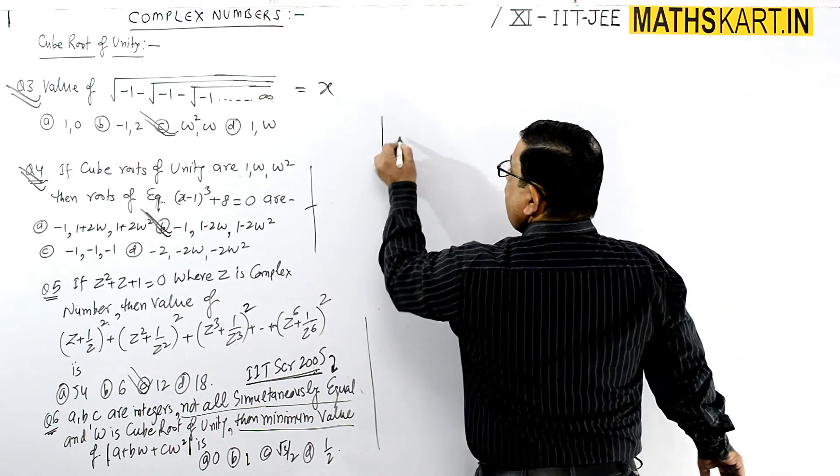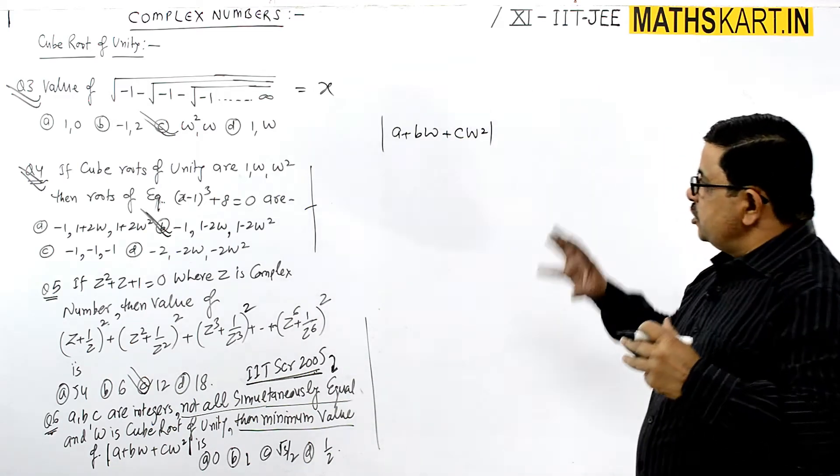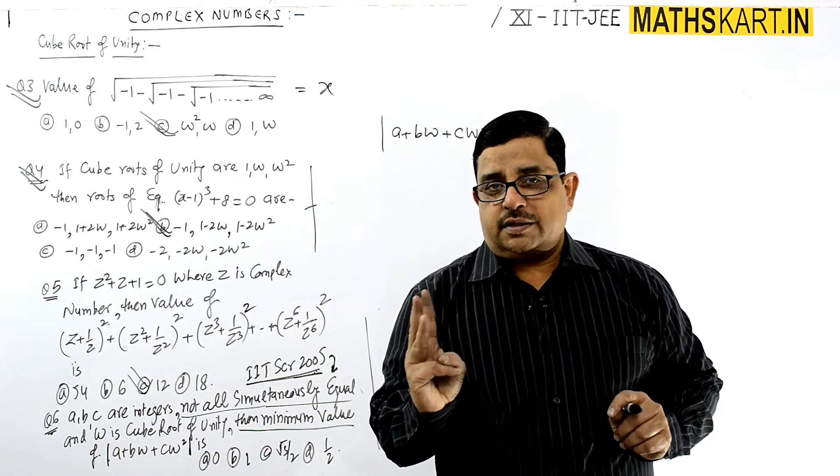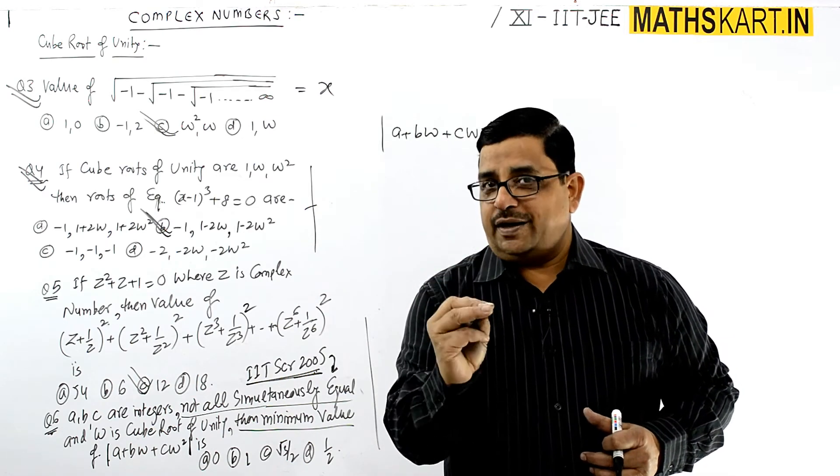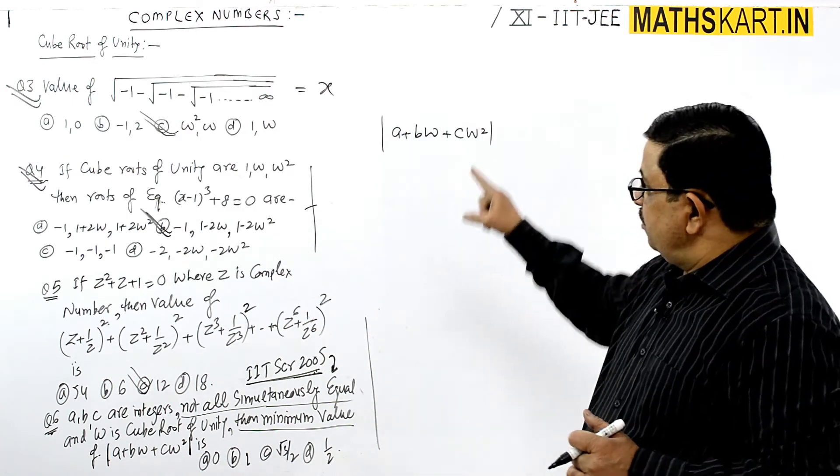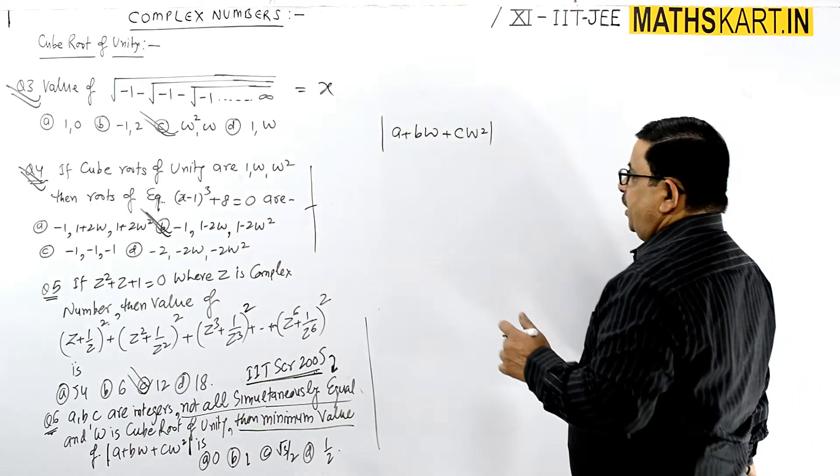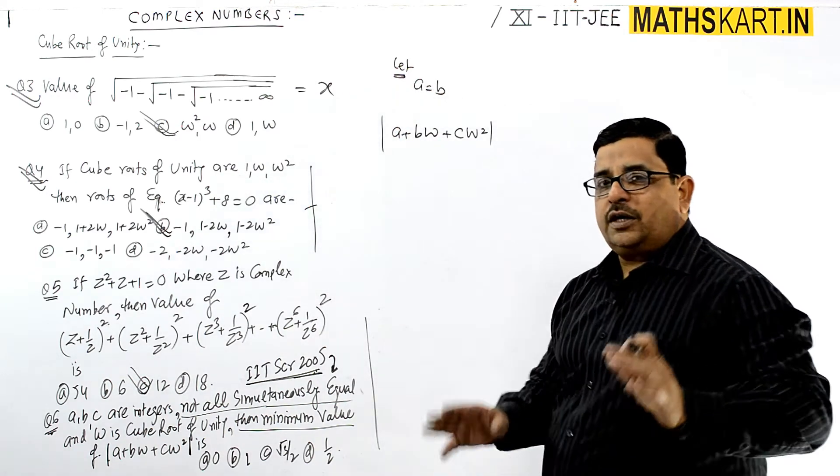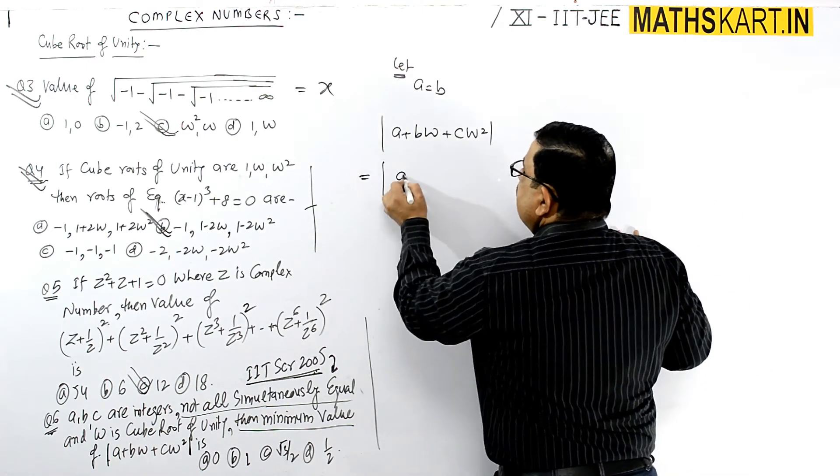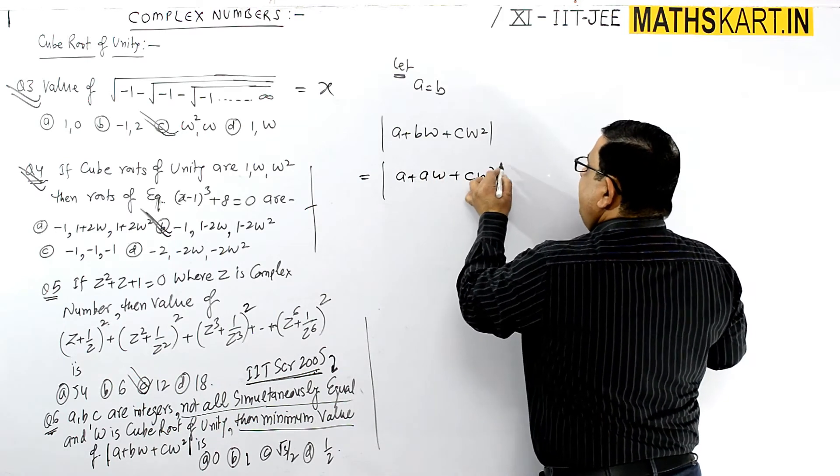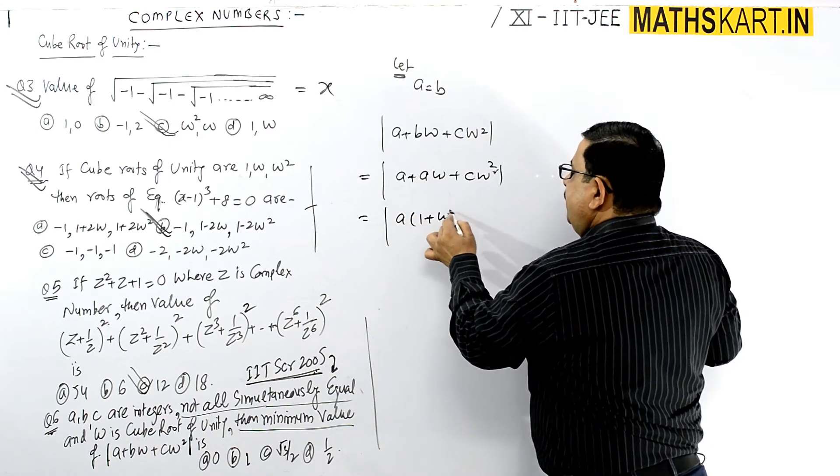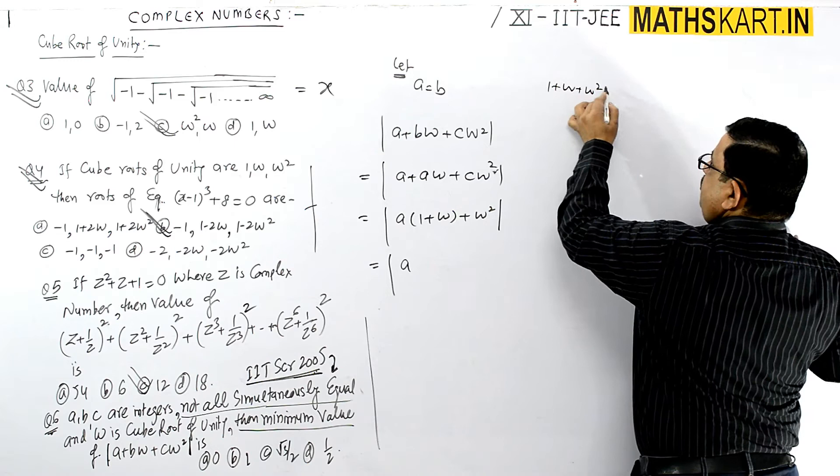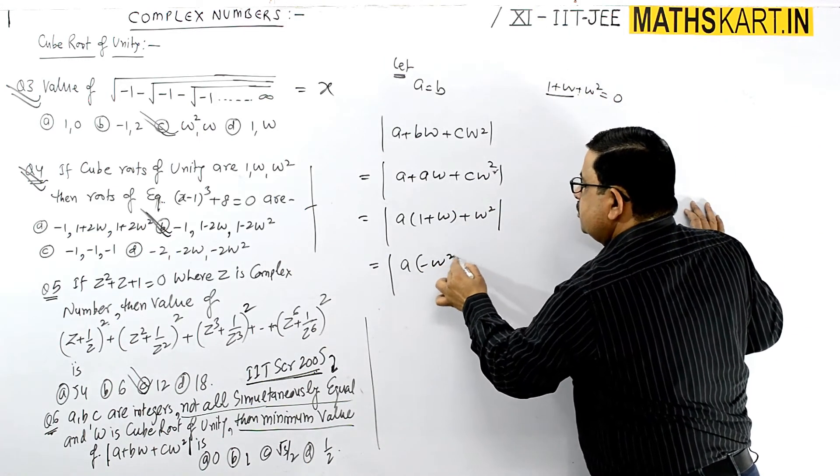Minimum value of this: A plus B omega plus C omega square. The minimum value of this particular portion is required. At a time, we can equal two values. So A plus A omega plus C omega square.